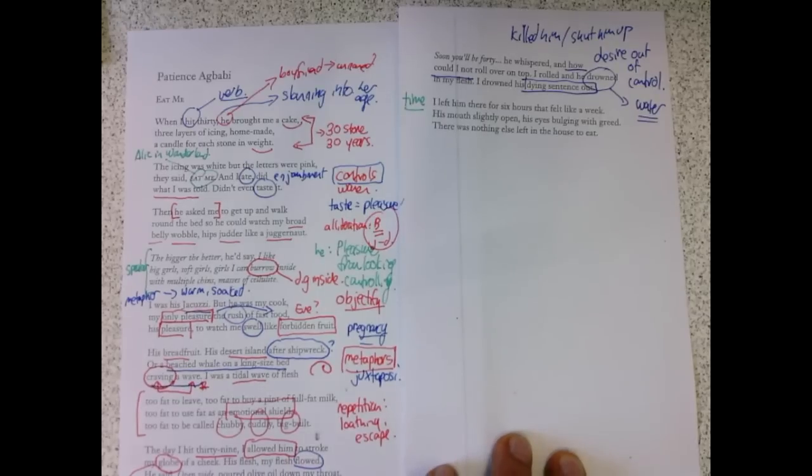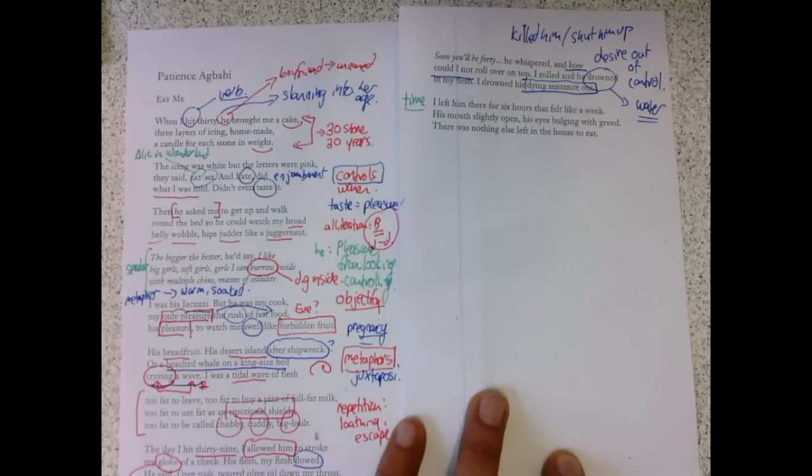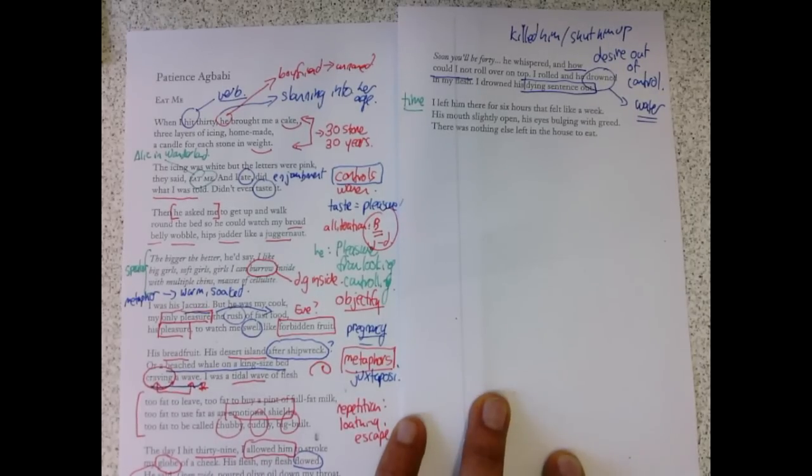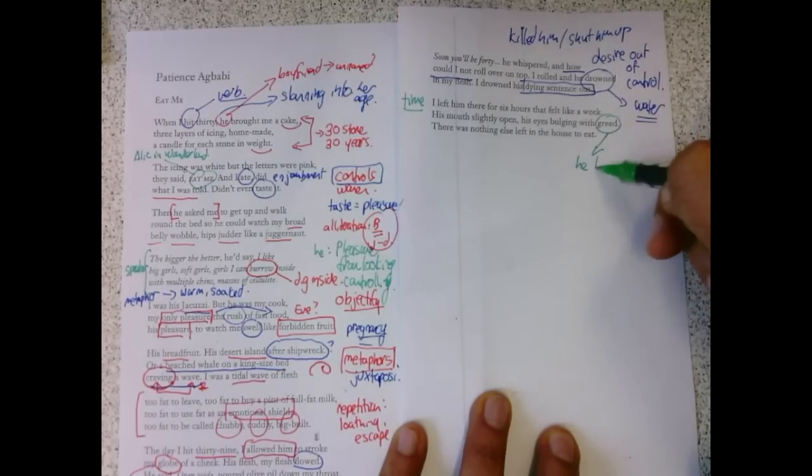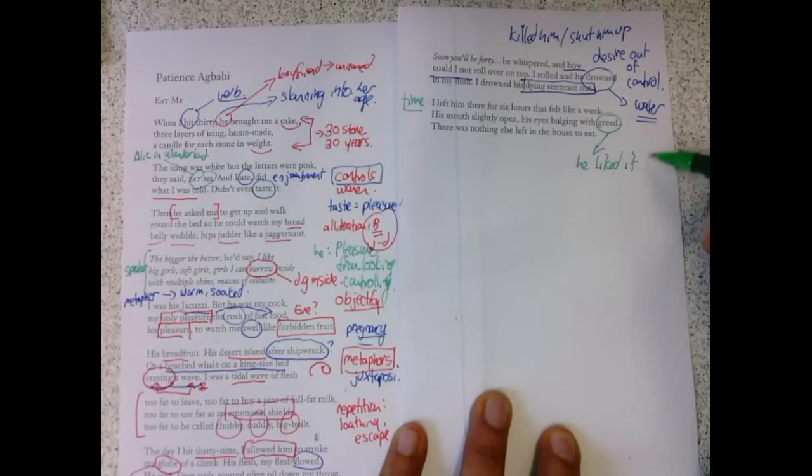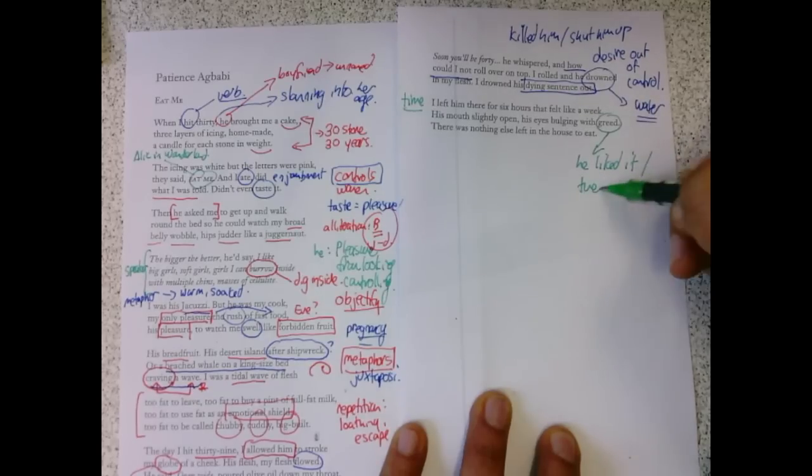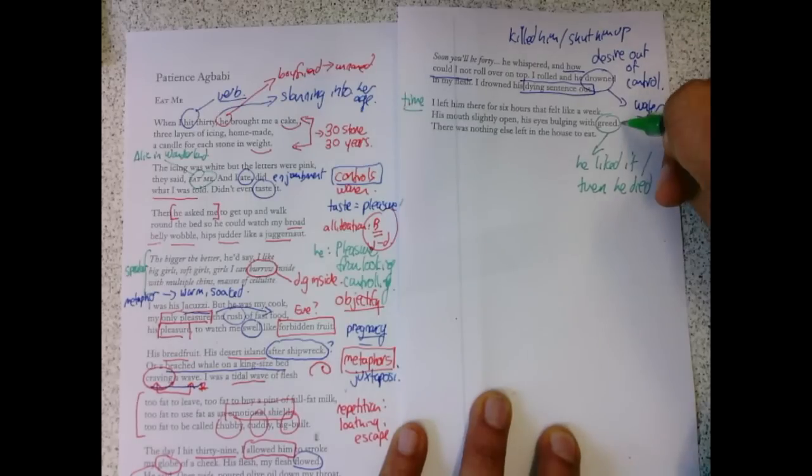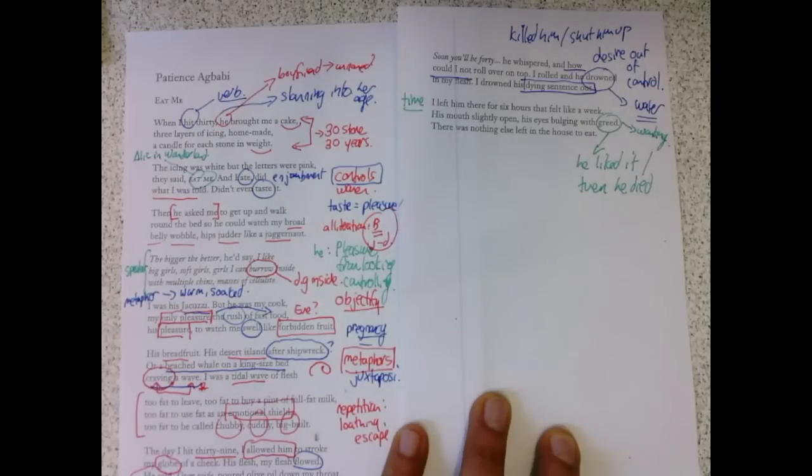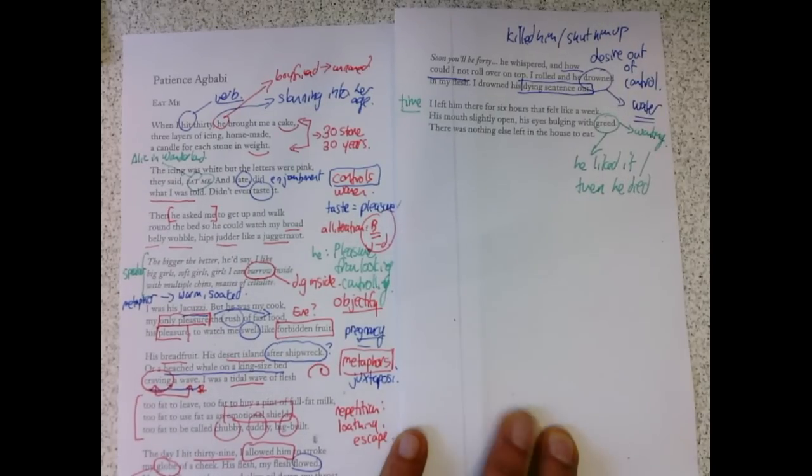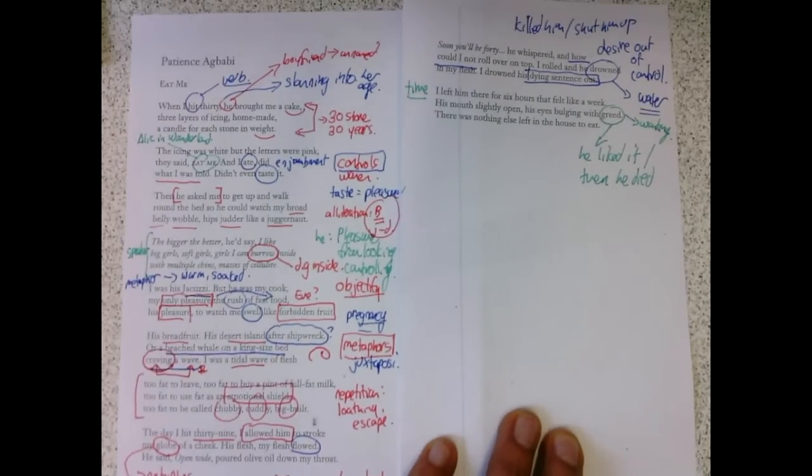The poem has taken nine years. And now time again is strange. I left him there for six hours and it felt like a week. His mouth slightly open, his eyes bulging with greed. He liked it. Then he did. Then he died. There was a kind of wanting, never ending, wanting for the sake of wanting. She's the large one, but he's actually the greedy one.